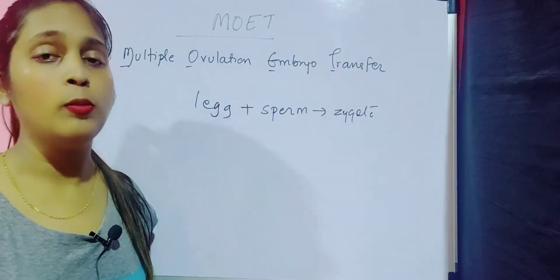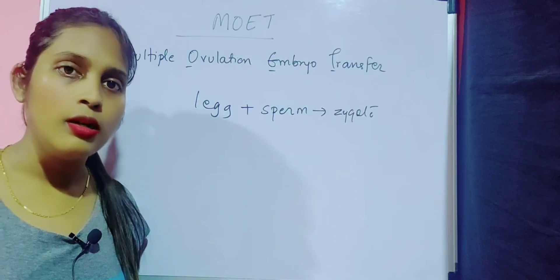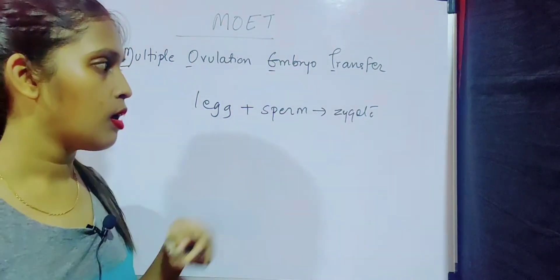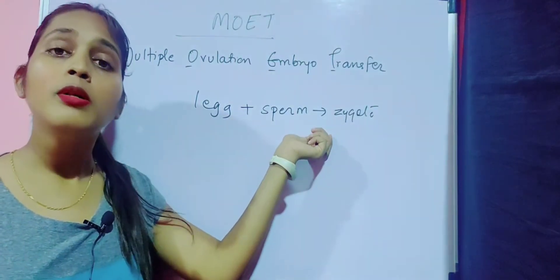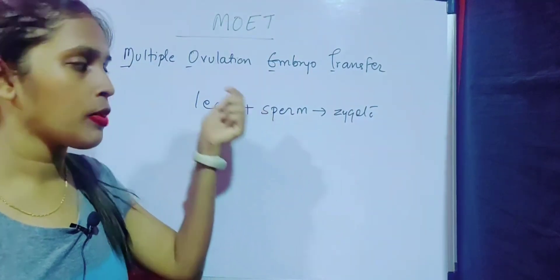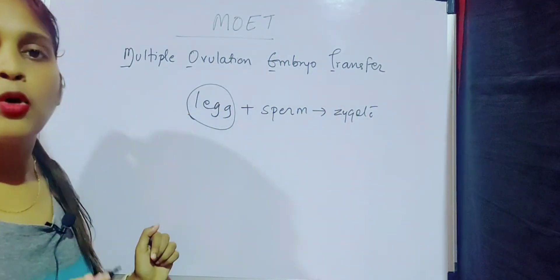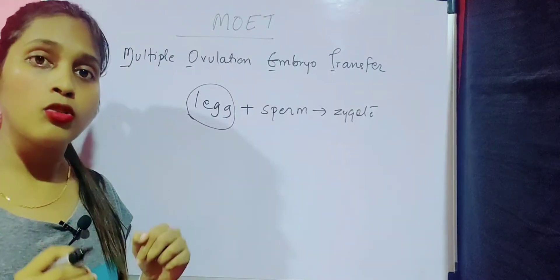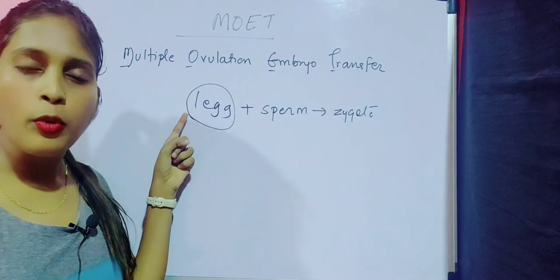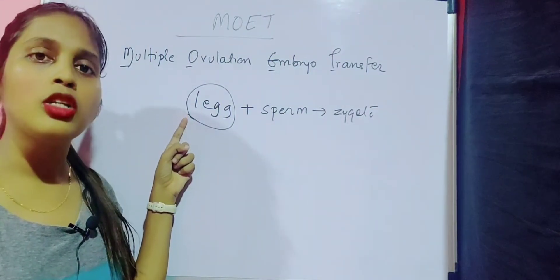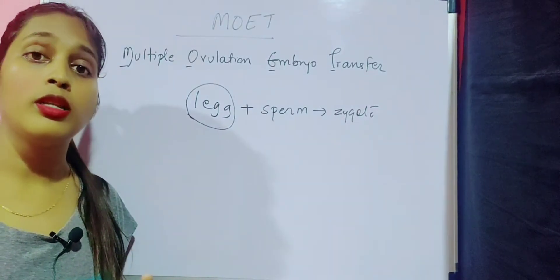Our technique here is to increase the number of zygotes and increase the progeny. How is it possible? We are going to increase the production of eggs. Since in a normal cycle only one egg is produced, we are going to induce the female so that she might produce more than one egg — around six to eight eggs.